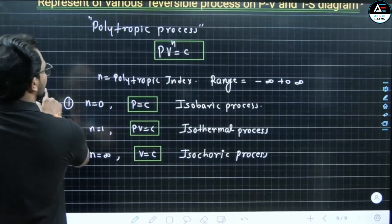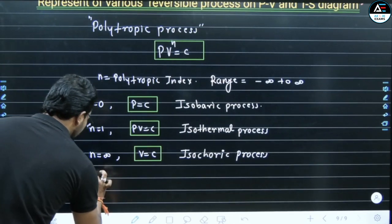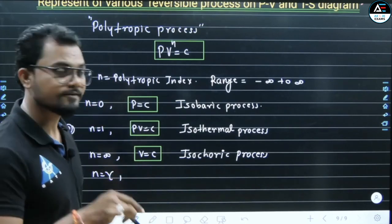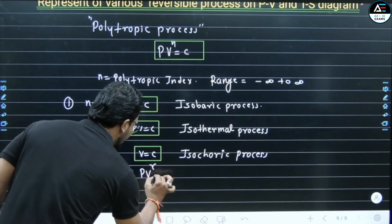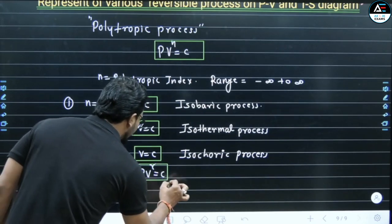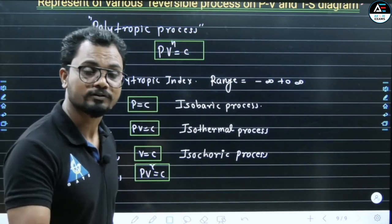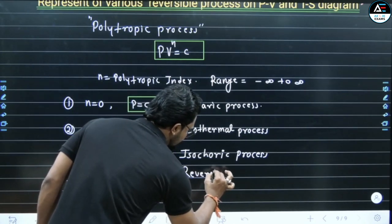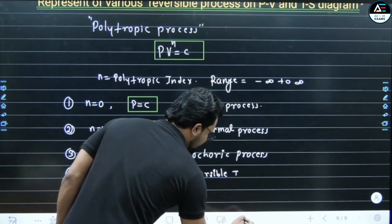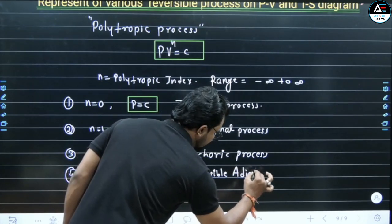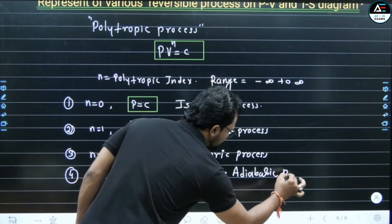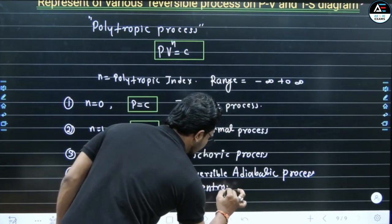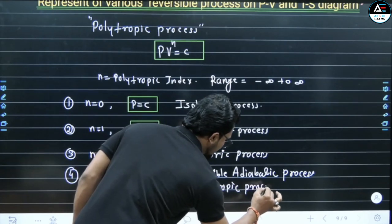Next, let's see point number 4. N = gamma. When N = gamma is substituted, the equation we get is PV raised to power gamma = constant. This is known as the reversible adiabatic process, also called the isentropic process. So here we write: reversible adiabatic process, or isentropic process.